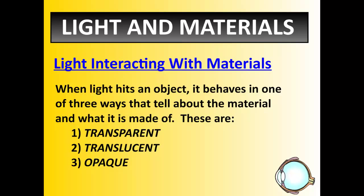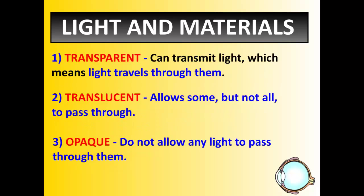Now, sometimes light will pass through an object, sometimes it won't at all, and sometimes it's kind of in between. Whenever light hits an object, it behaves in one of three ways that tells us all about the materials. It either is transparent, the material is translucent, or it is opaque. All three of these, again, probably review for you. Transparent means that something can transmit light. Light travels right through it. Cellophane, glass, anything that light can travel directly through, we say it's transparent.